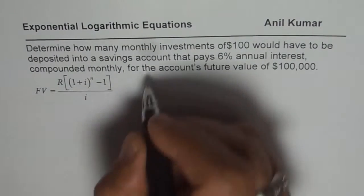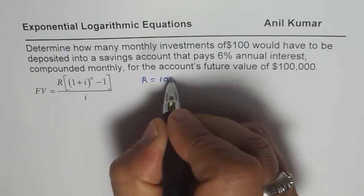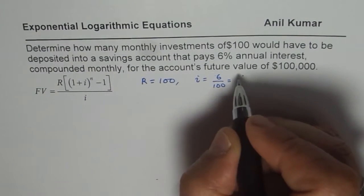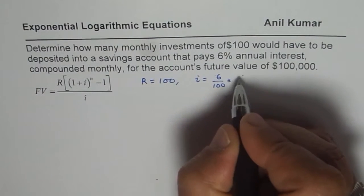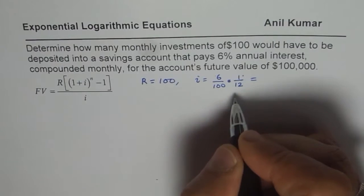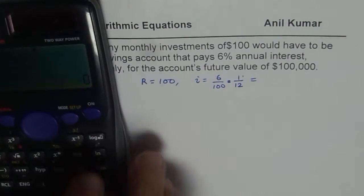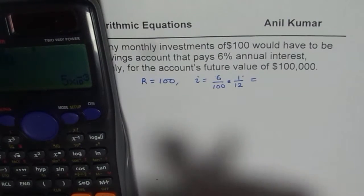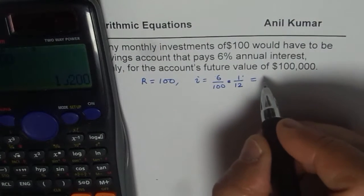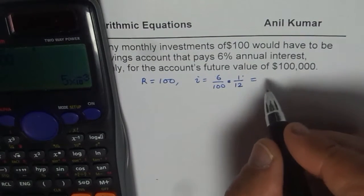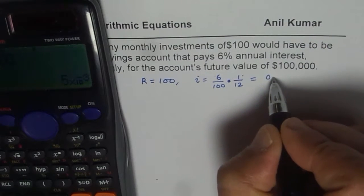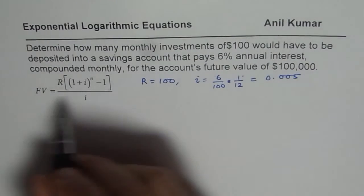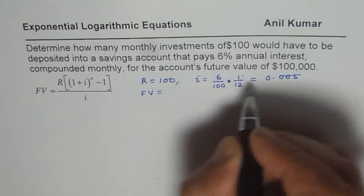$100 per month is the R value — that is the amount repeatedly deposited in the savings account. The interest rate I is 6%, that means 6 over 100, and since it is deposited monthly, we multiply by 1 over 12. That gives us the monthly interest rate, which is 6 divided by 1,200 — equal to 5 times 10 to the power of negative 3, that means 0.005. And we are given the future value as equal to $100,000.